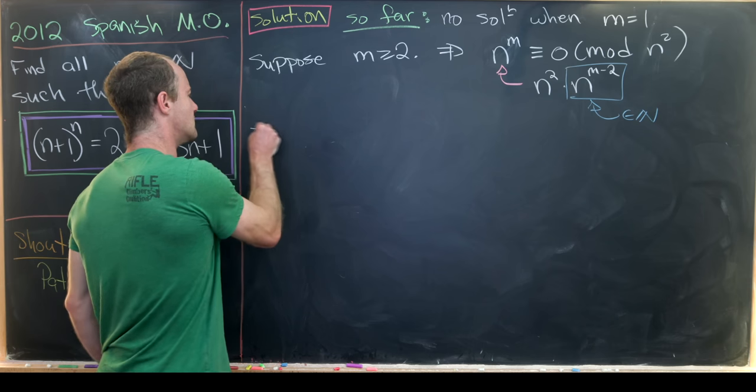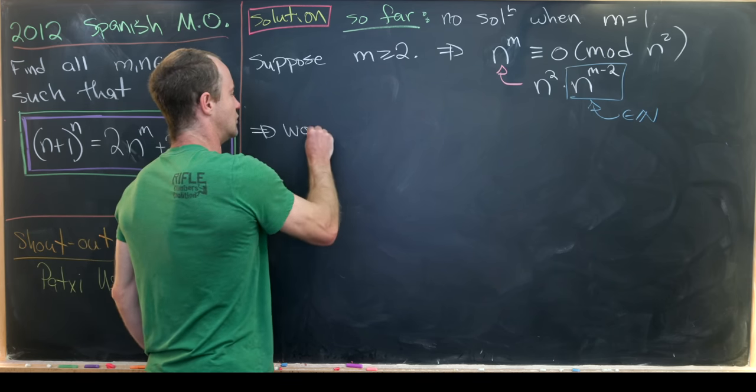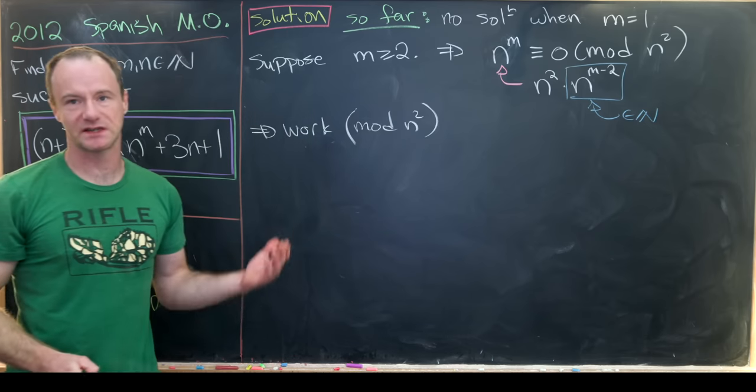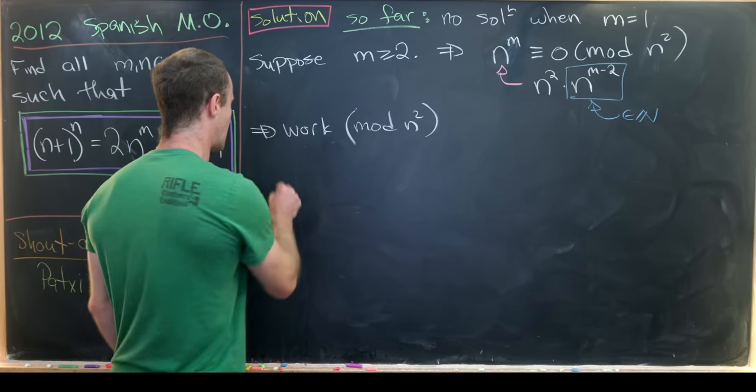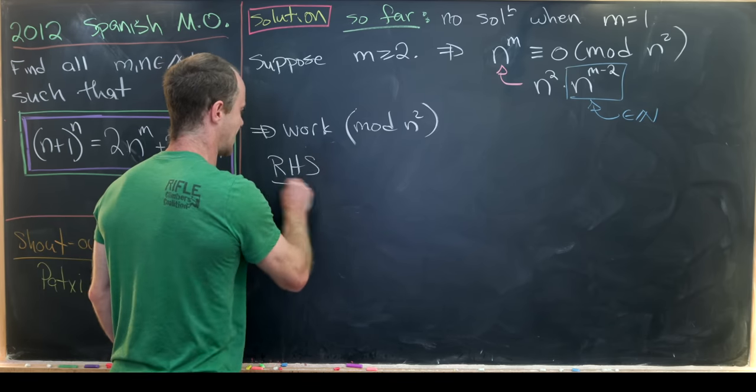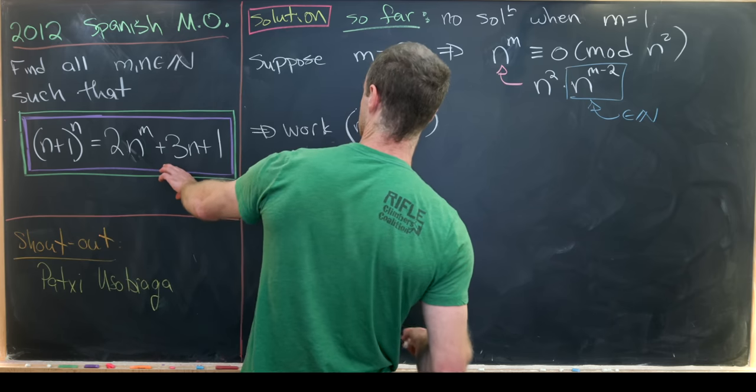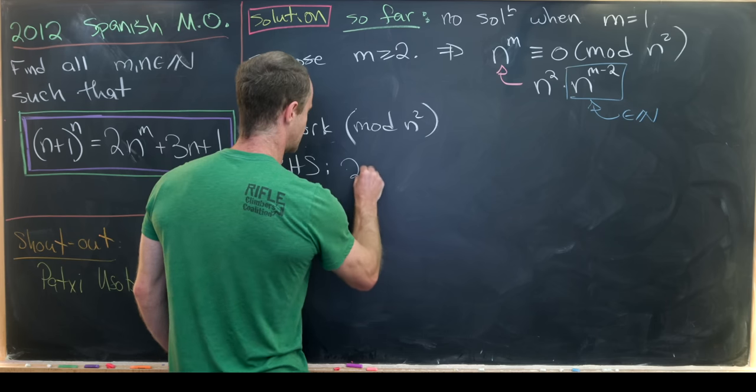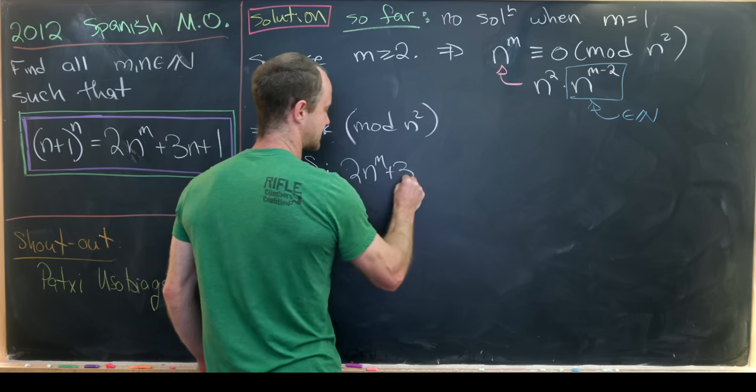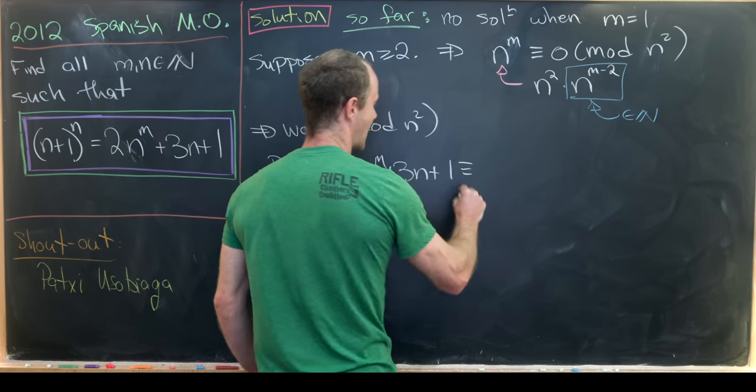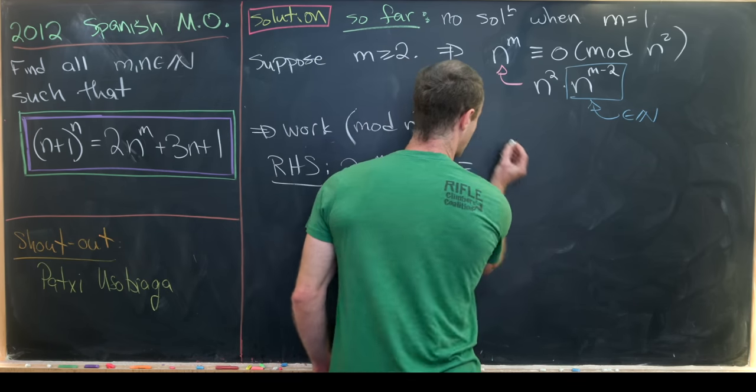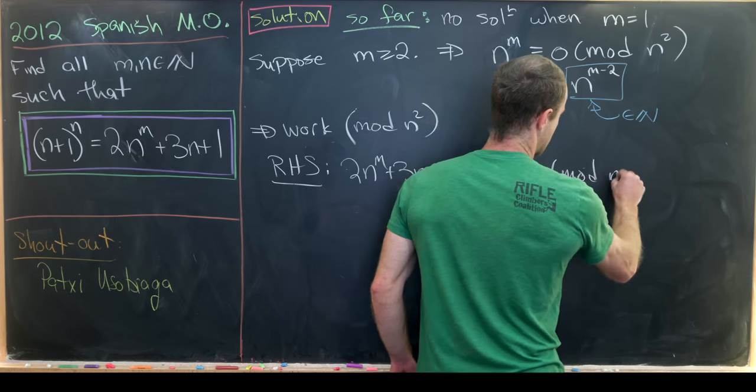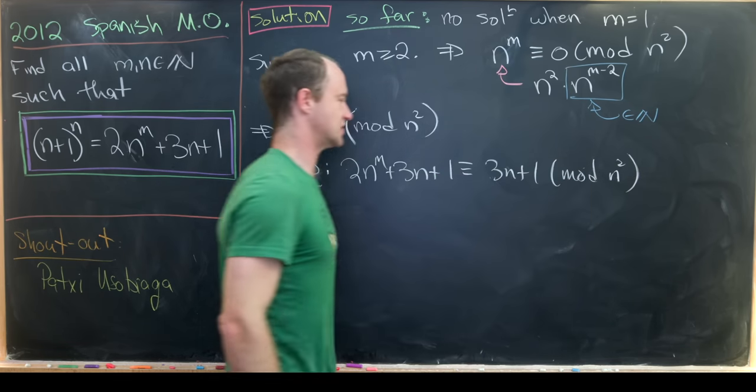So, but this motivates us to working with this whole thing modulo n^2, and seeing what sort of simplification we get. Well, let's first look at the right-hand side modulo n^2. So notice that the right-hand side, which is 2n^m + 3n + 1, will now be congruent to 3n + 1 mod n^2 by this observation that we just made.